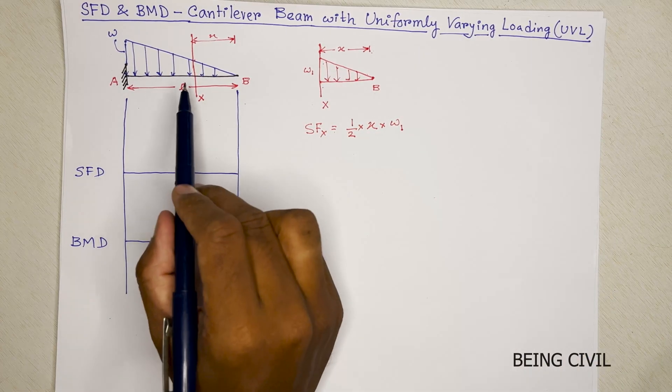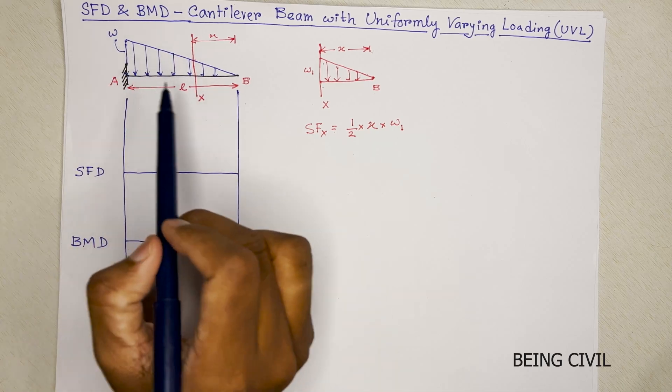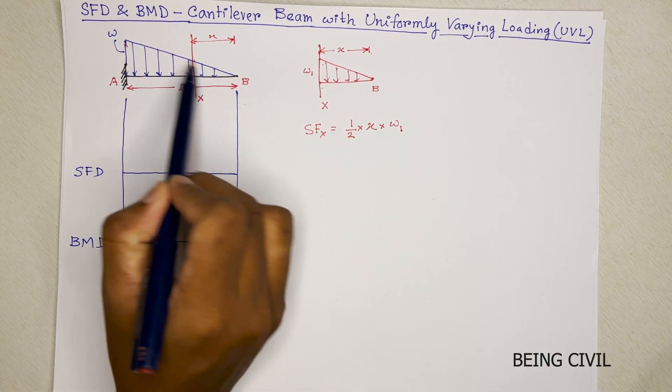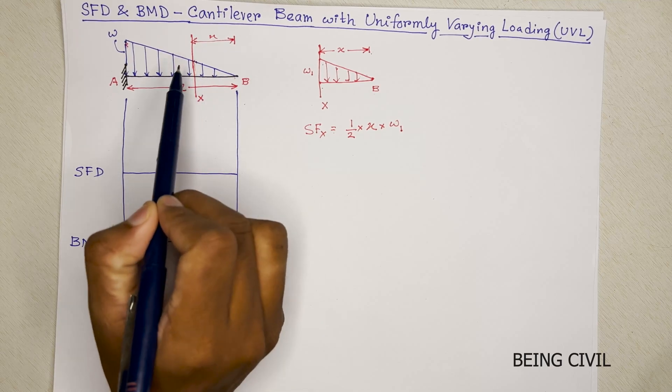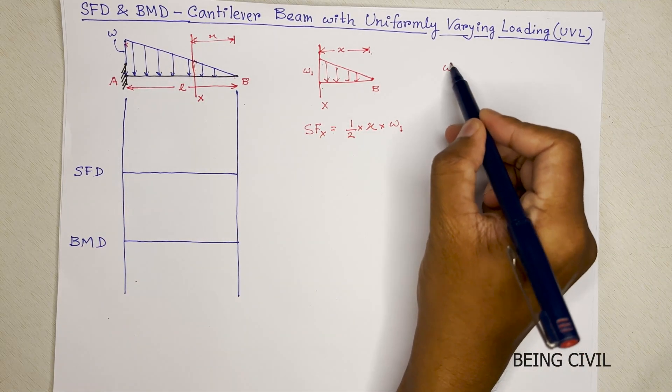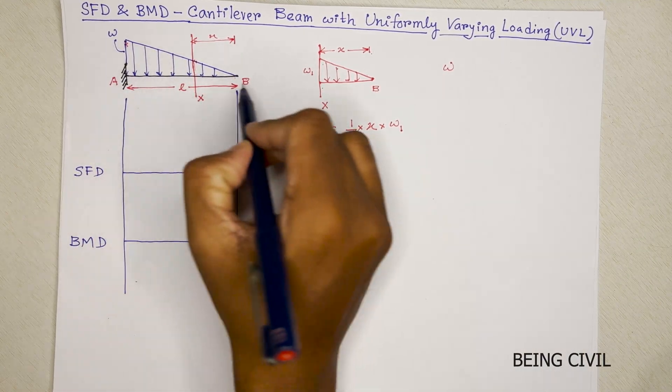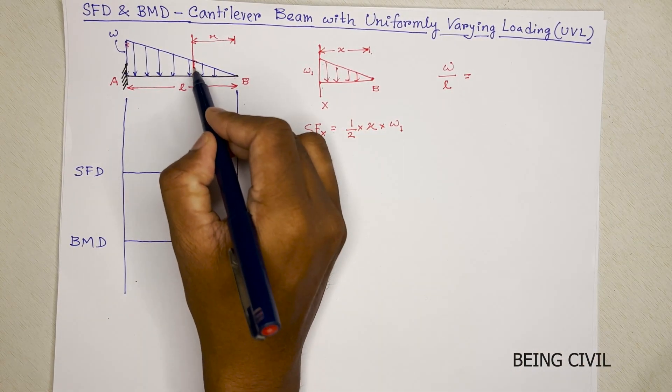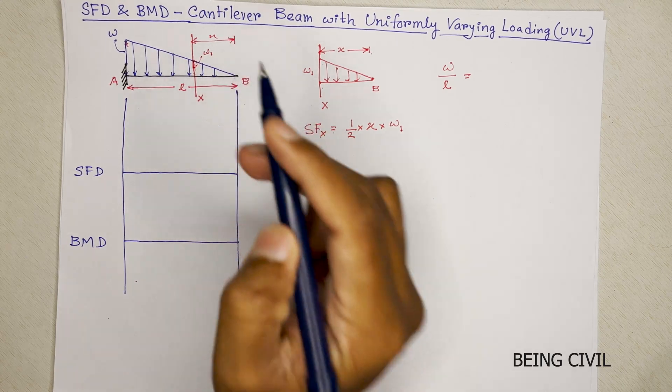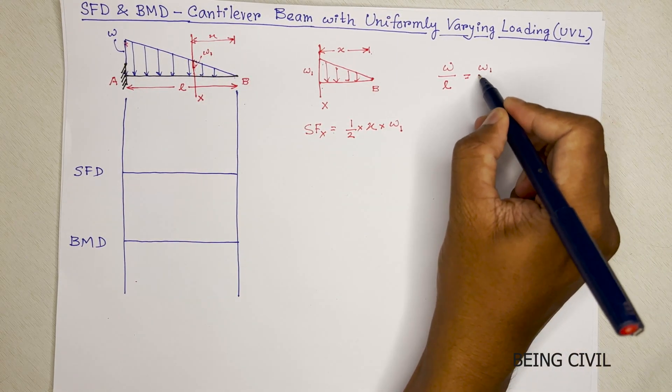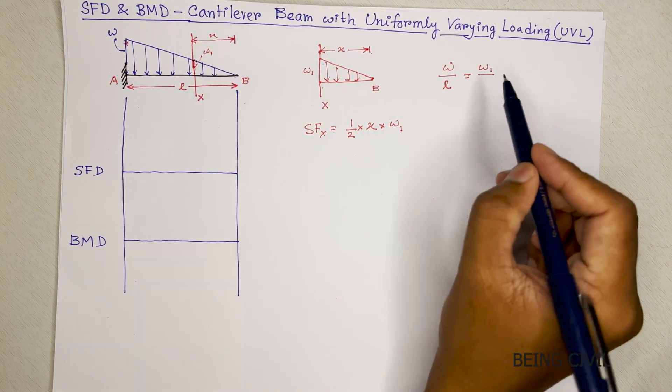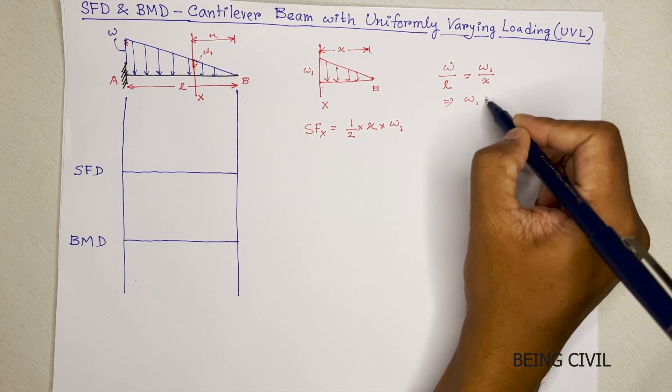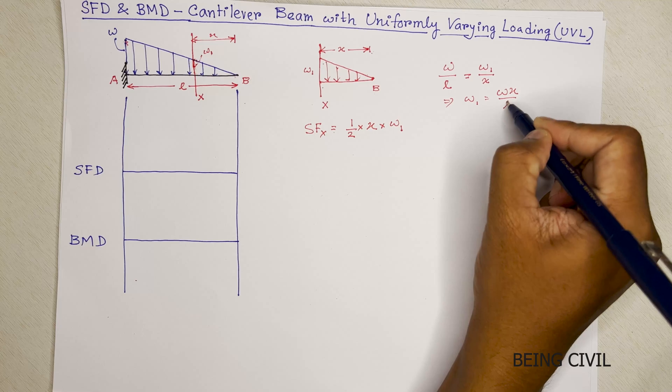Now we have to calculate W1 based on this similar triangle. This triangle and this small triangle are similar triangles. W is height by length which is L and height here is W1, so W1 by its base which is x. So W1 is Wx by L.